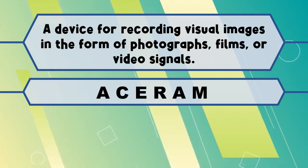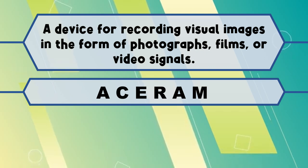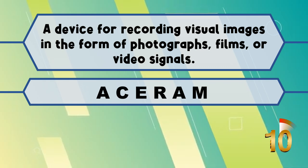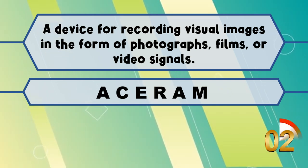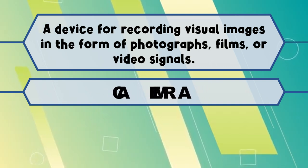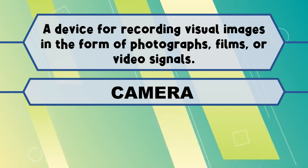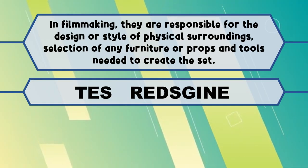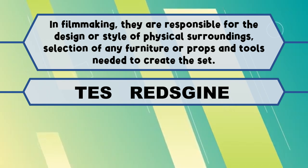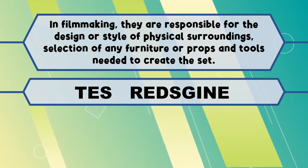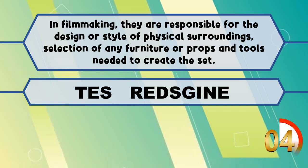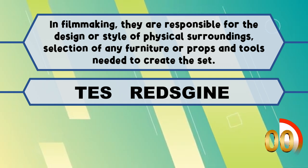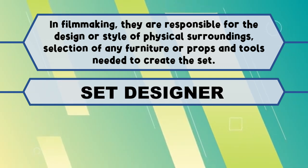Let's proceed to number 3. A device for recording visual images in the form of photographs, films, or video signals. If your answer is camera, superb! You got it right! Next, number 4. In filmmaking, they are responsible for the design or style of physical surroundings, selection of any furniture or props, and tools needed to create the set. If your answer is set designer, you are amazing!